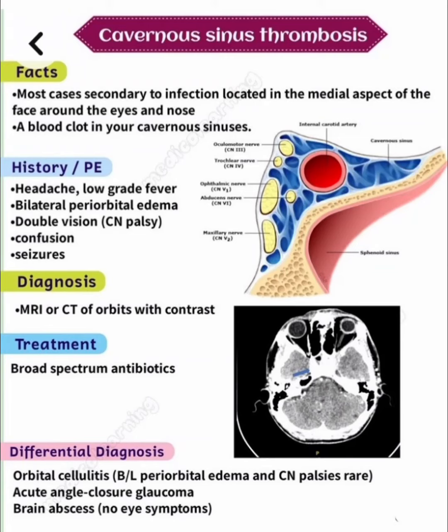This is cavernous sinus thrombosis. The main pathophysiology is that most cases are secondary to infection located in the medial aspect of the face, around the eyes and nose, leading to a blood clot in the cavernous sinuses. This can develop secondary to sinusitis.